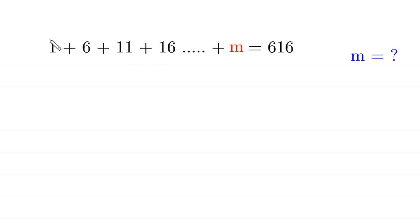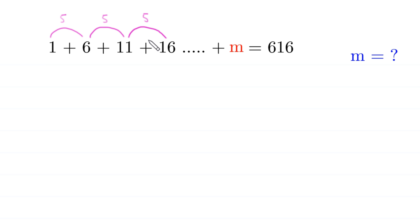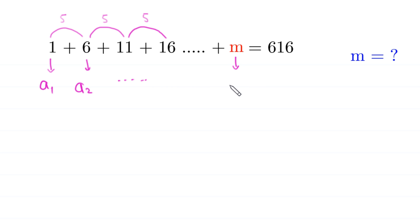The difference between the terms 1 and 6 is 5, the difference between 6 and 11 is 5, and the difference between 11 and 16 is 5. So the difference is constant between all consecutive terms. This is an AP series. The first term is called A sub 1, the second term A sub 2, and the last term is A sub n. The sum is called S sub n.